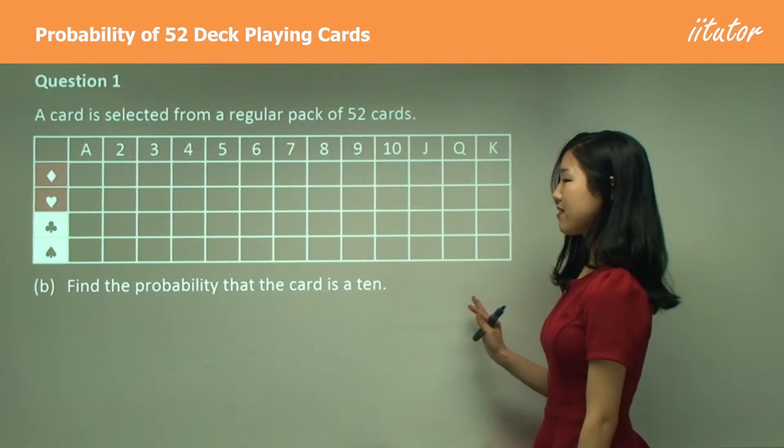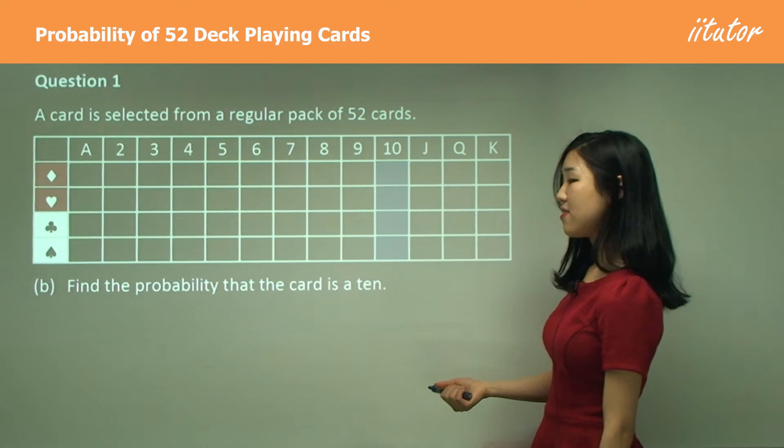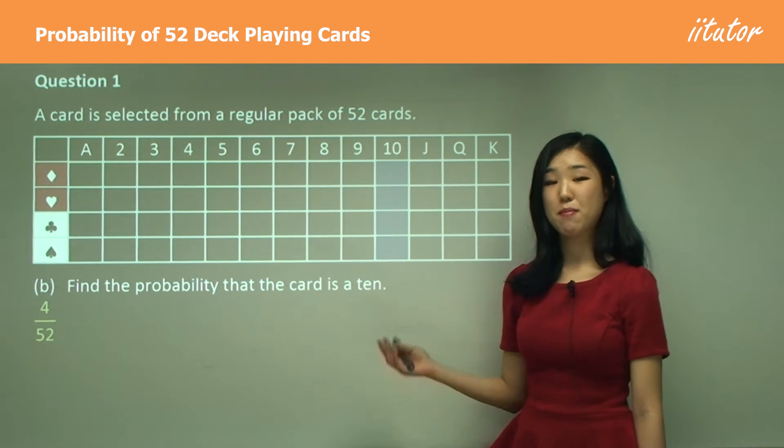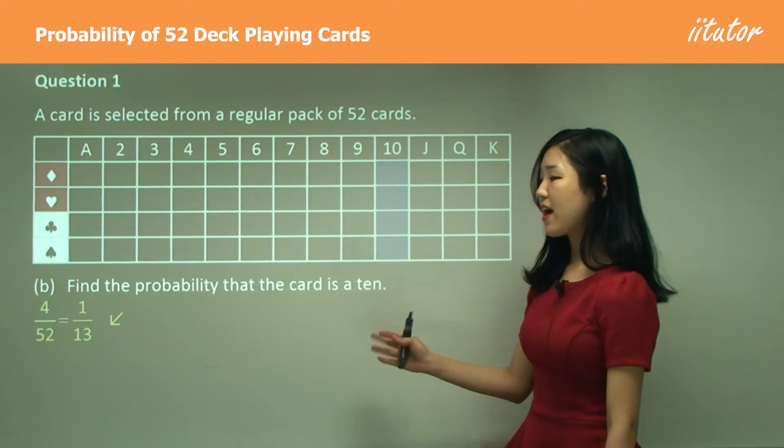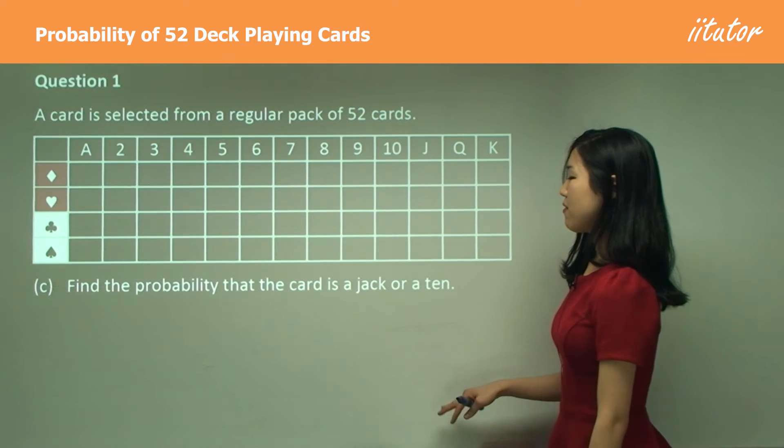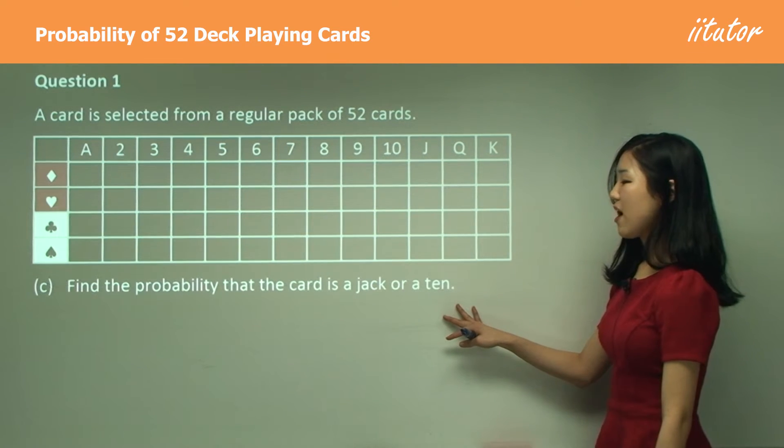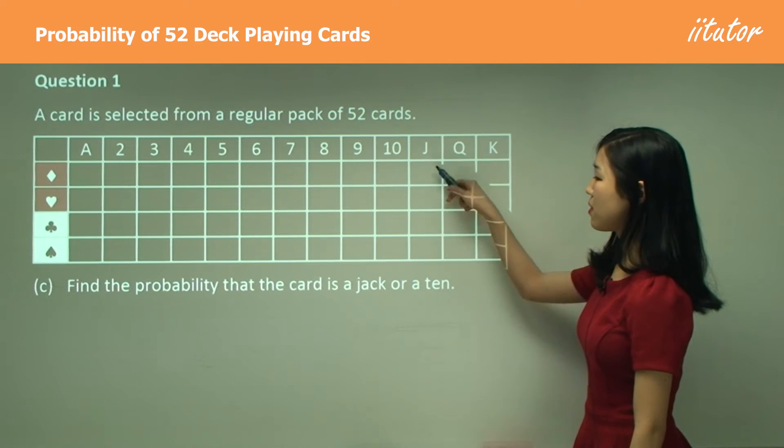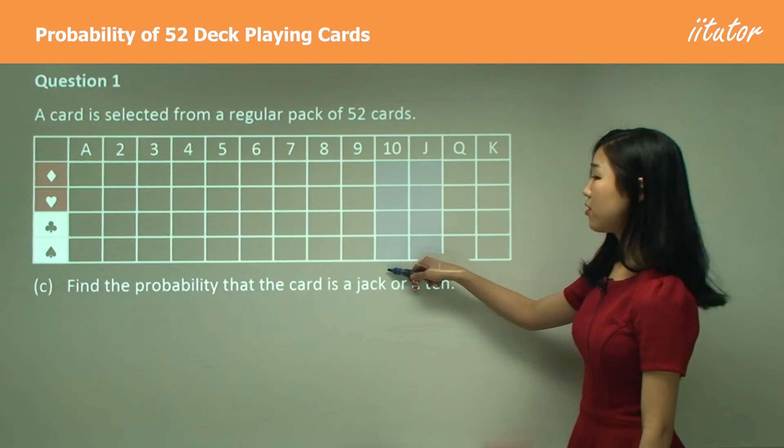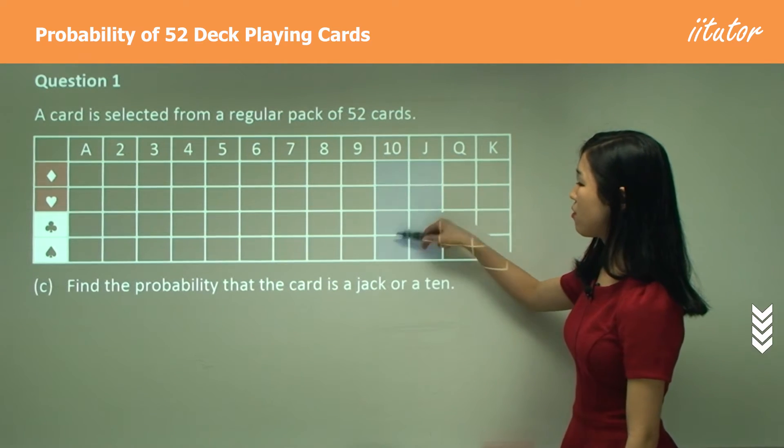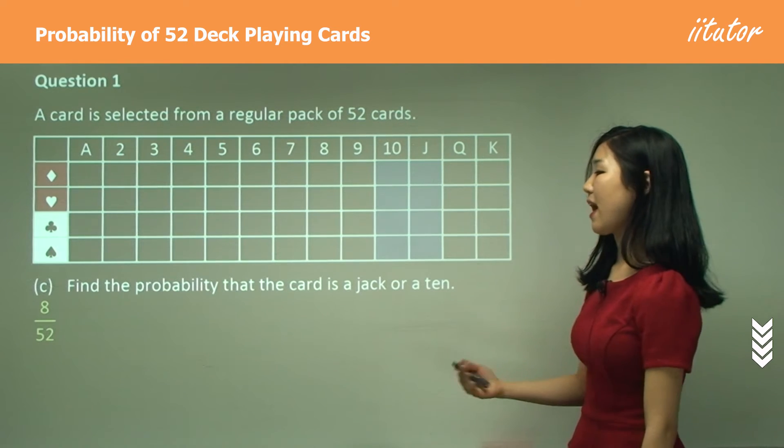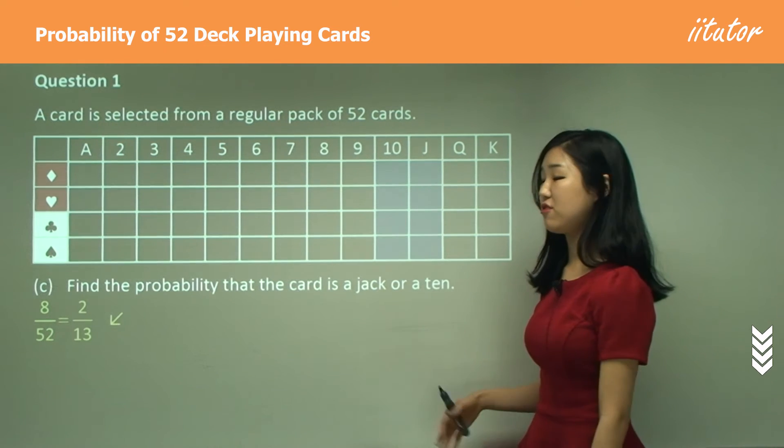Part b: Find the probability the card is a 10. These are the 10s—there's only 4 out of 52 that are 10. The probability simplified is 1 over 13. Part c: Find the probability that the card is a Jack or a 10. Jack or 10 is going to be this and this, so how many are there? One, two, three, four, five, six, seven, eight. So it's simply 8 out of 52, which is simplified to 2 over 13.